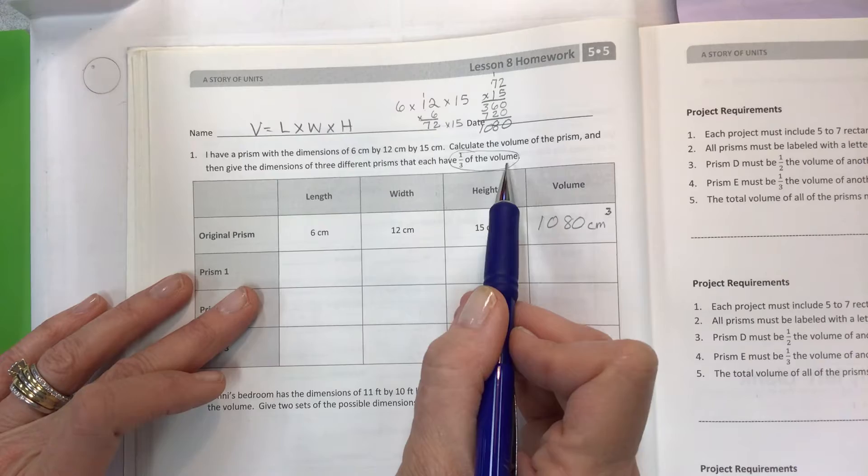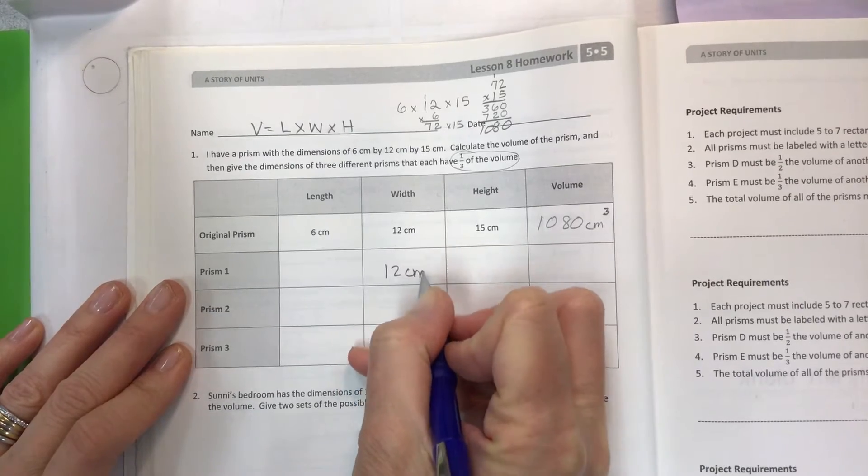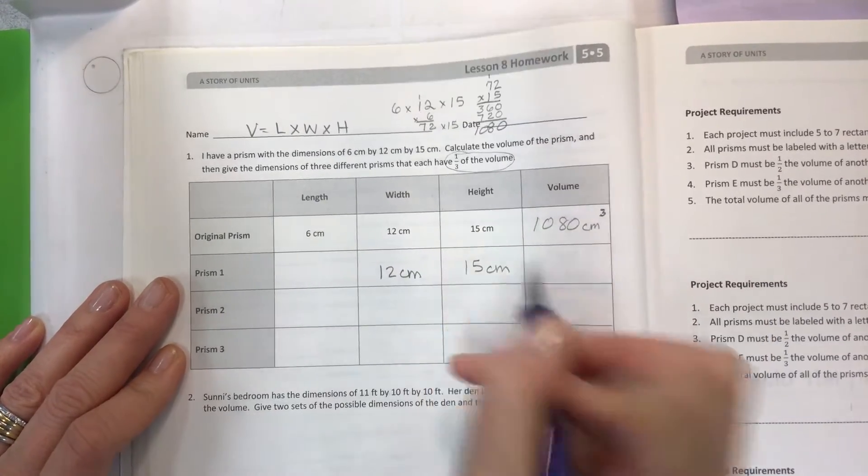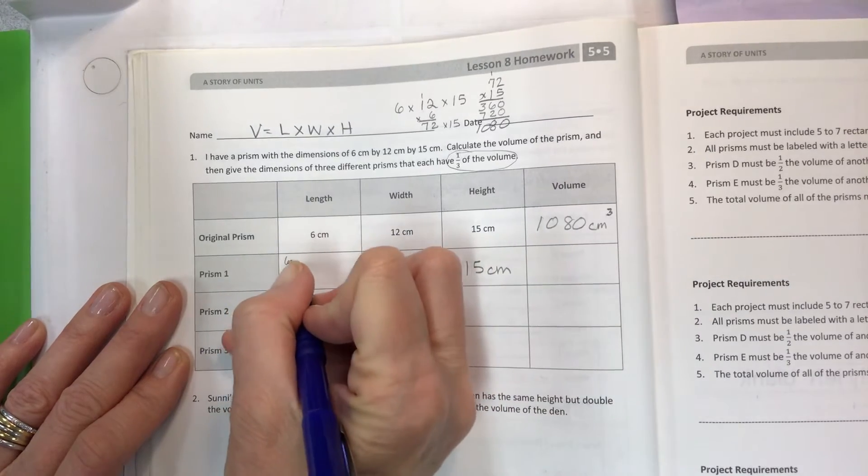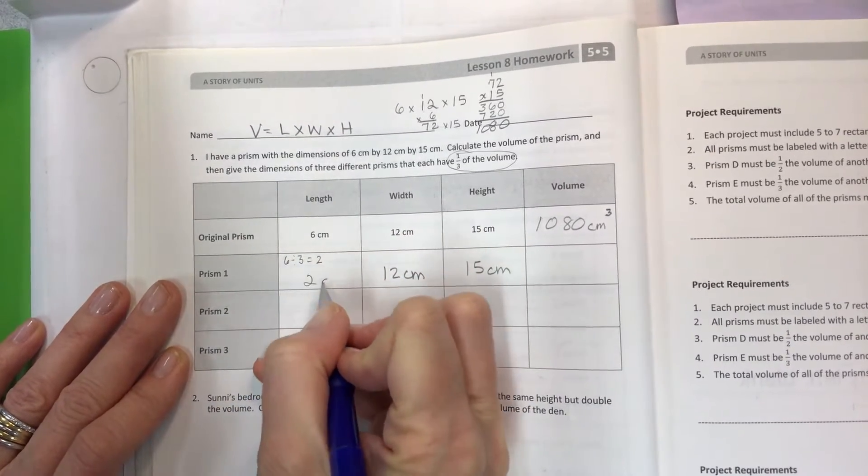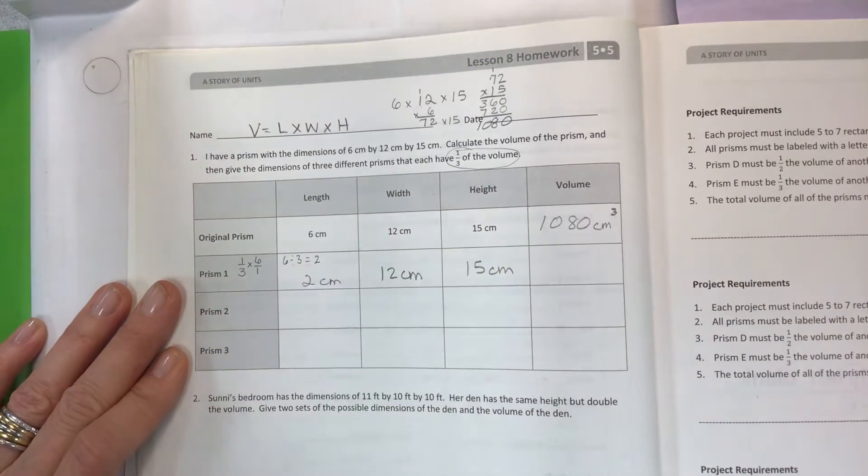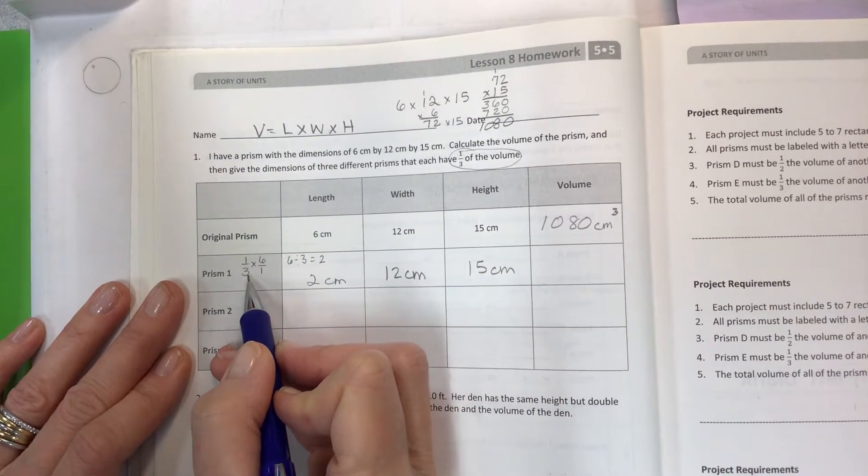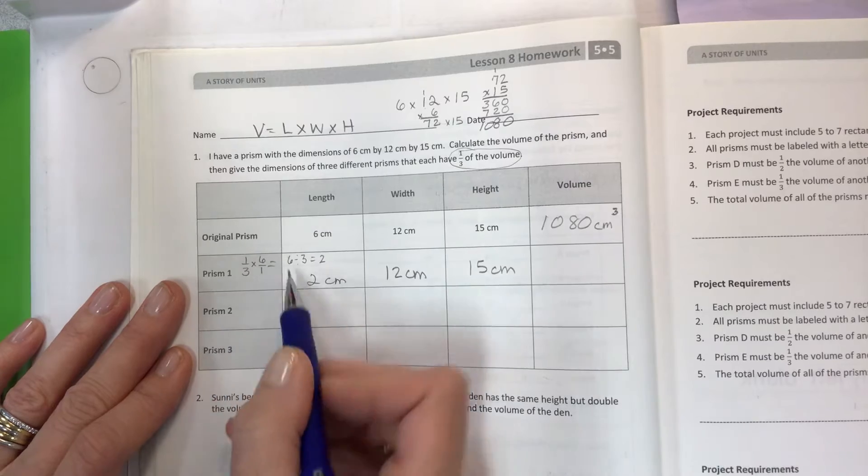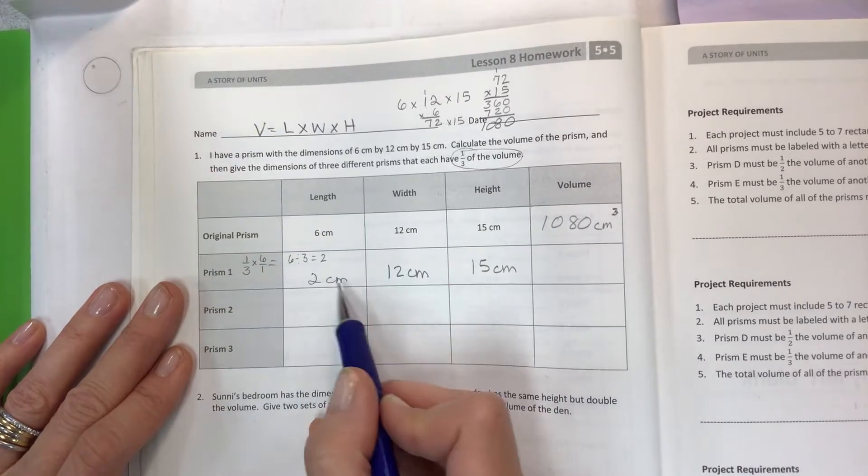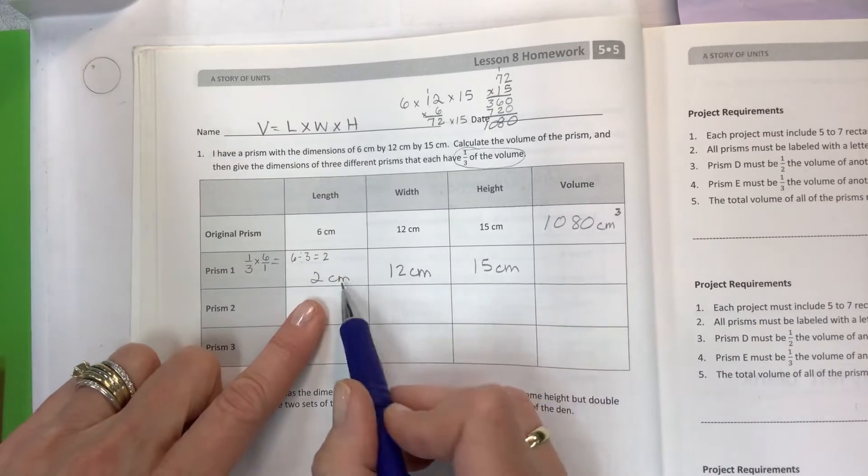Now here's where things get interesting. If you would like to have a prism that has one-third the volume, the trick here is to only change one number at a time. We're going to start with our length, leave everything else the same, but choose one-third of 6. So basically 6 divided by 3 is 2. You can also think of one-third of 6, which is essentially what you're doing here—6 divided by 3, six-thirds, you can cross cancel, it's all the same, all 6 divided by 3.